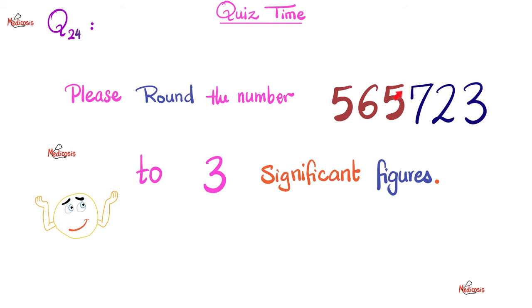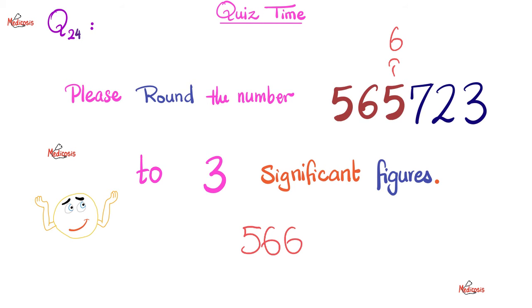For the second example, they want three significant figures. Look to the digit just after the third significant figure — to the right — it's a 7. So I round up: this 5 becomes a 6. The answer is 566,000 — three trailing zeros — and here I have only three significant figures.